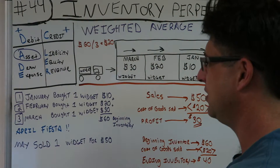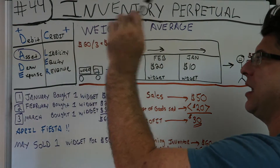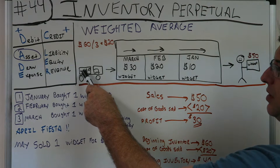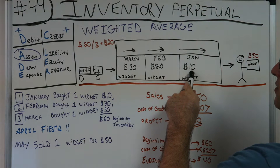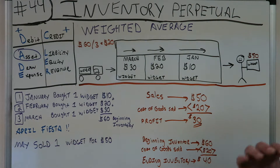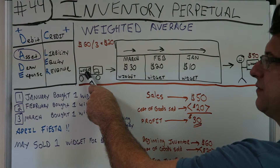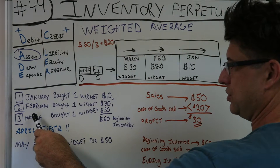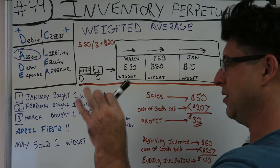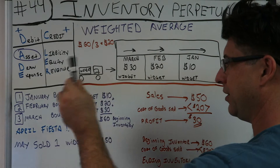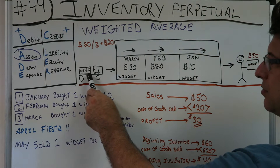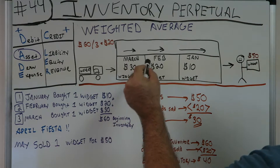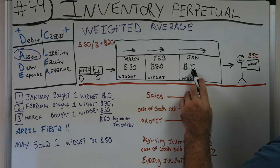By now you know the drill — if not, here's the facts. We know inventory is an asset. Here's the first thing we did: January, bought one widget for $10. Here's that January widget, $10, there it is in our building. Next month, February, bought one widget for $20 — here's the February widget for $20. So now we've got our January and our February in our warehouse. March, next month, we bought another widget for $30 — they keep going up like inflation. So here's our March one for $30, and it parks right here in our building. We have $60 in our beginning inventory: March for $30, February for $20, and January for $10.